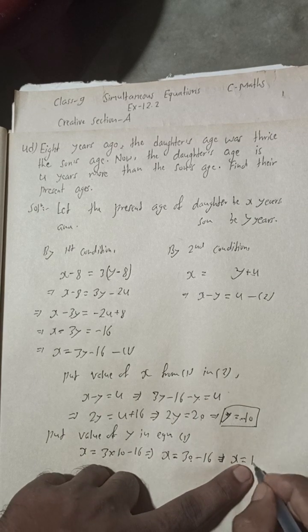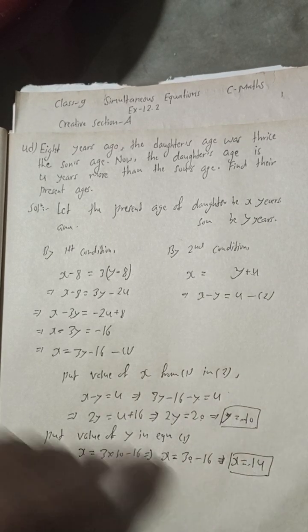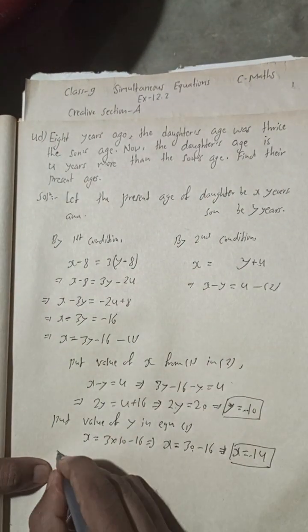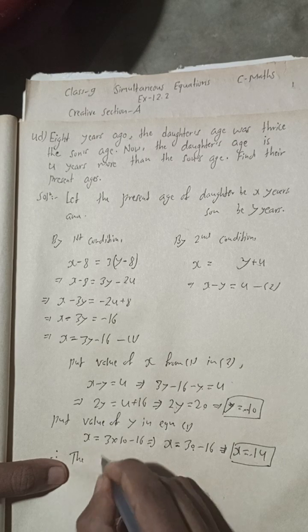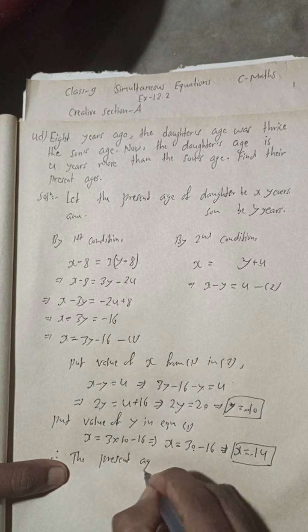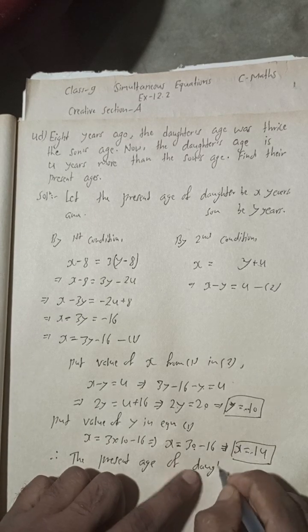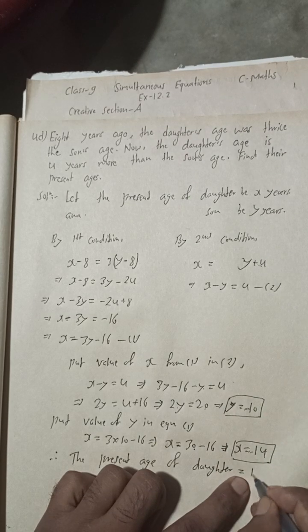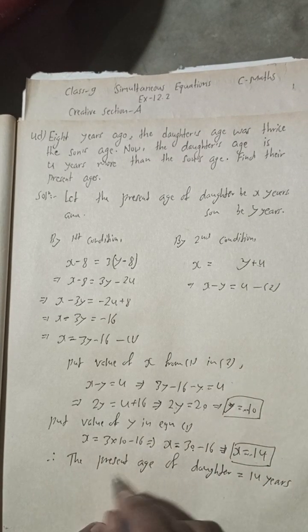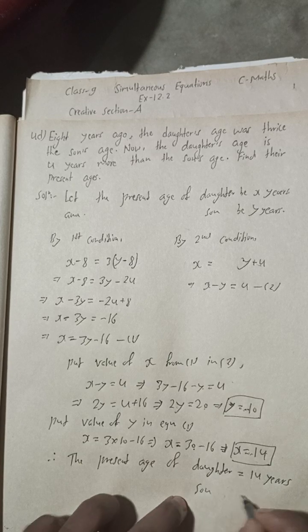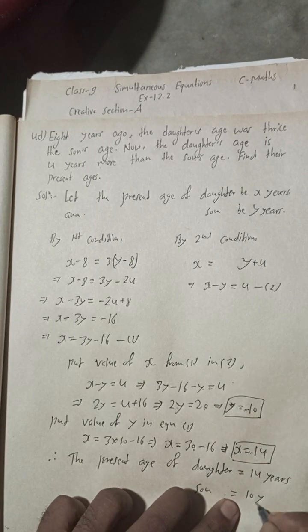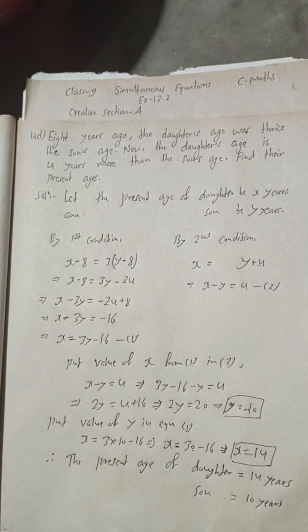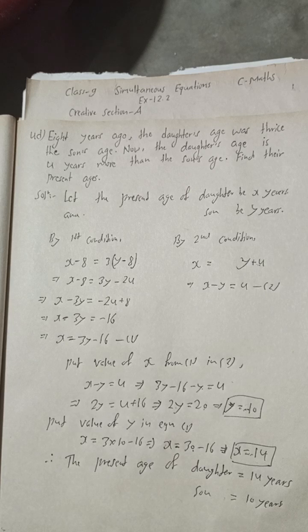So x equals 30 minus 16 equals 14. Therefore the present age of the daughter is x equals 14 years, and the present age of the son is y equals 10 years. This is the complete solution of 4D.